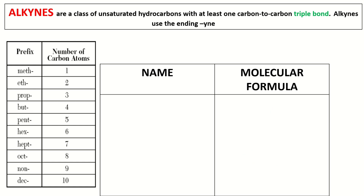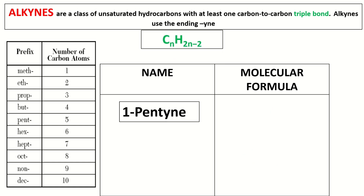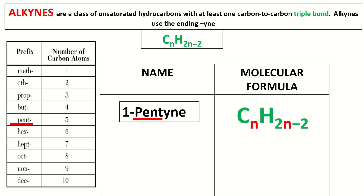Another example is 1-pentyne. Again, the number indicates the location of the triple bond. It has the prefix 'pent,' which means 5 carbon atoms. We substitute n = 5, so C₅. For the hydrogen atoms, 2 times 5 equals 10, and 10 minus 2 equals 8.